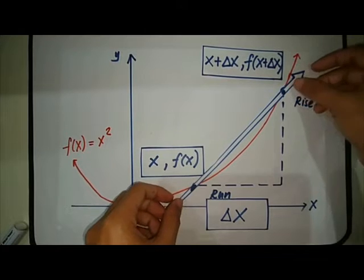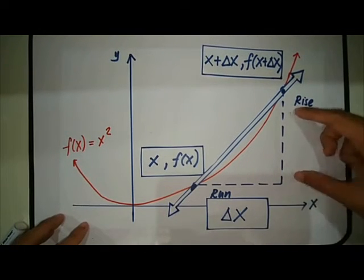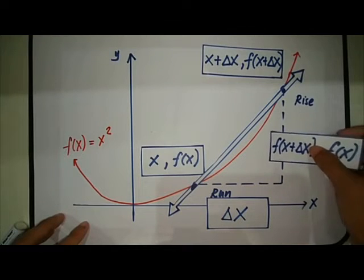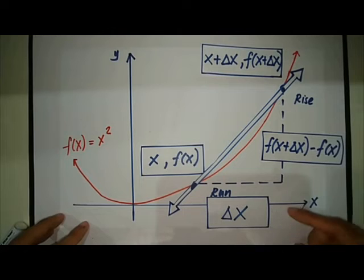So m is equal to, you have this change of y. This is f(x + Δx) - f(x) all over the run. So the run is Δx.